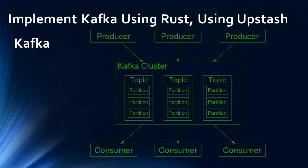Producers produce streams of data by means of any events. Streams of data are pushed into a topic. Consumers get their data by subscribing to topics. Each consumer is connected and kept tracked by a group ID in its partition on the topic.